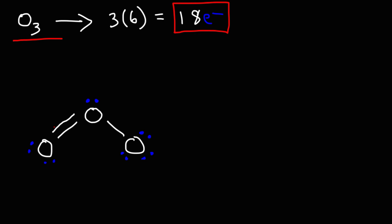If you add up the valence electrons, it's 2, 4, 6, 8, 10, 12, 14, 16, and then 18. The bond angle is close to 120 degrees, and the hybridization of the central oxygen atom is sp2.